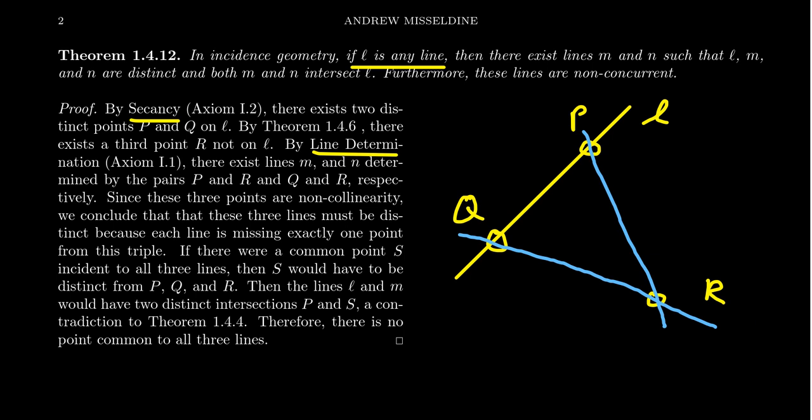Now, this feels like the set of points I'm looking for. So let's call these lines M and N. M is the line that's between P and R, and then N is the line between Q and R. I claim that these lines are non-concurrent. Is there a point that's on all three of these lines?